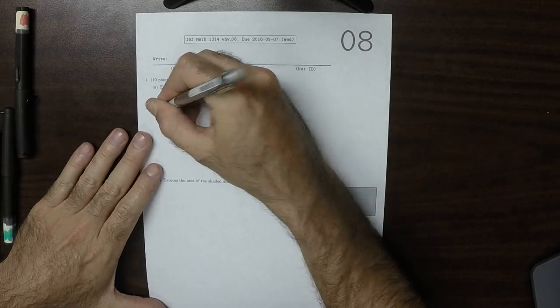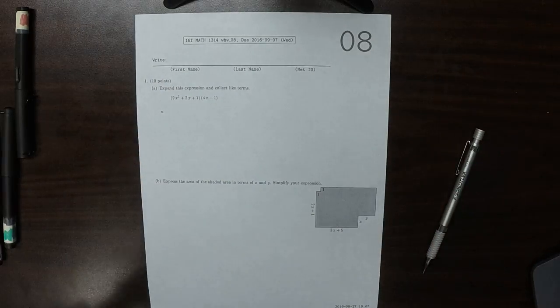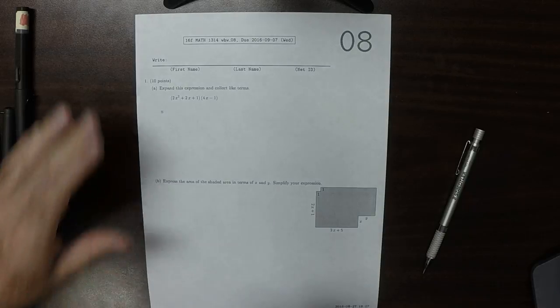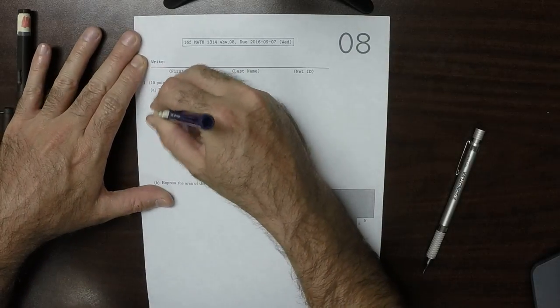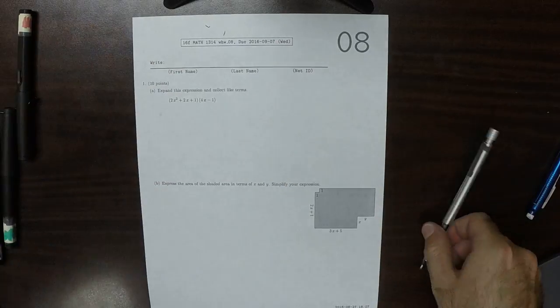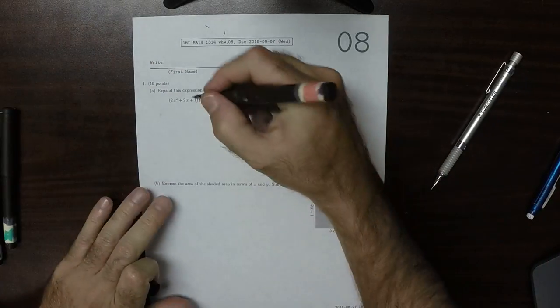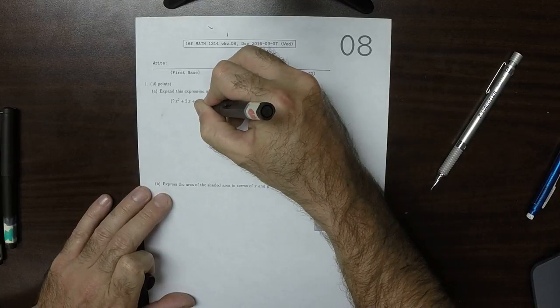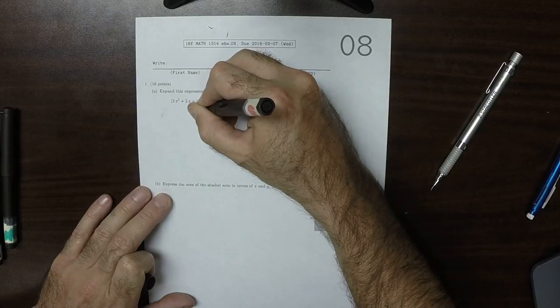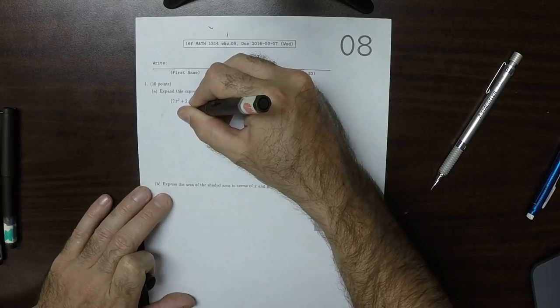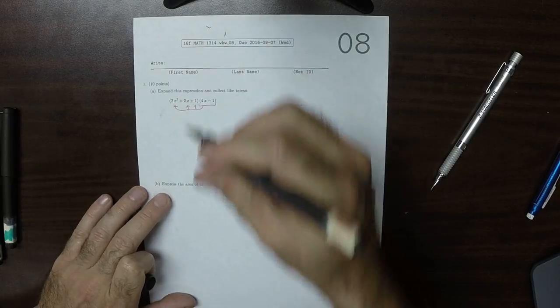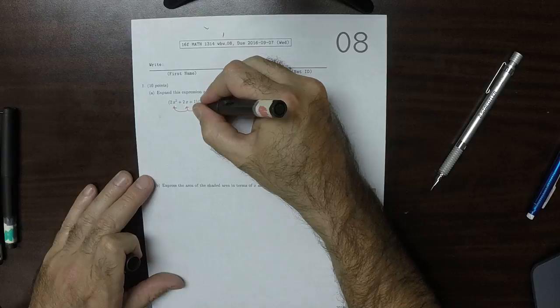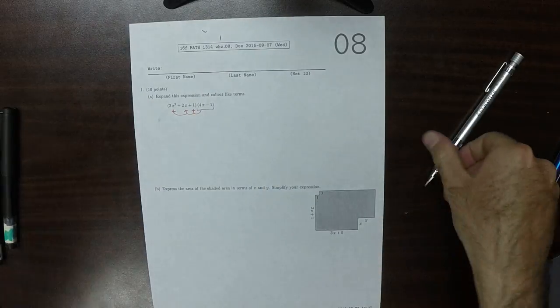What will happen is that you can distribute the left across the right or the right across the left. So what I'll do is I'll distribute this one into each of these. So to that one, to that one, to that one.